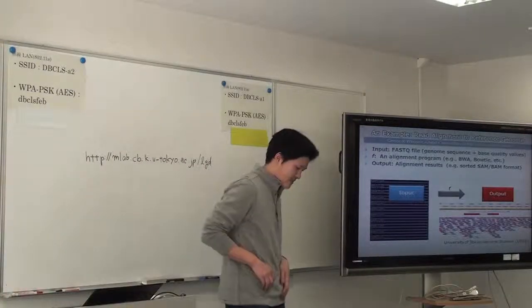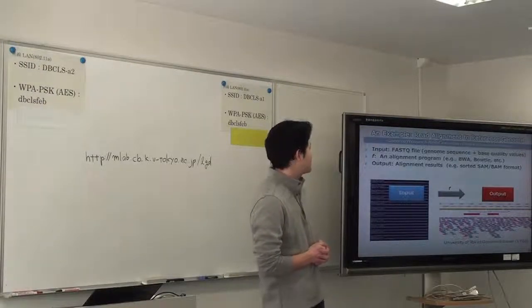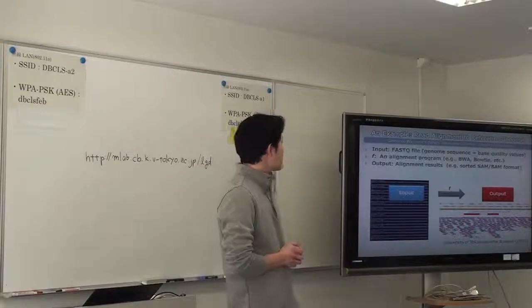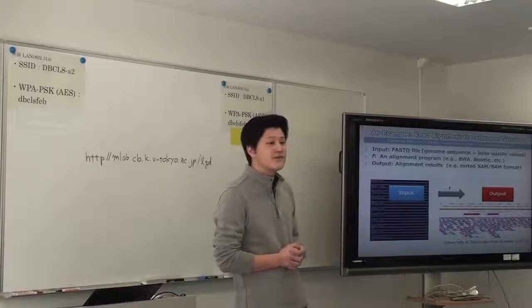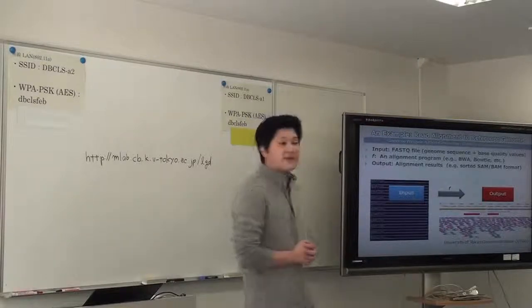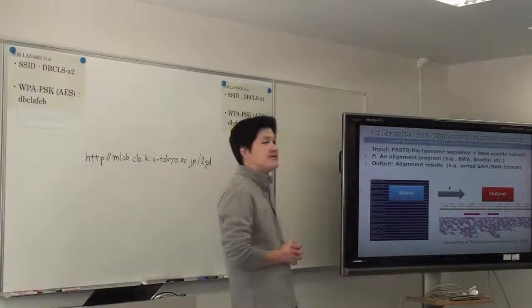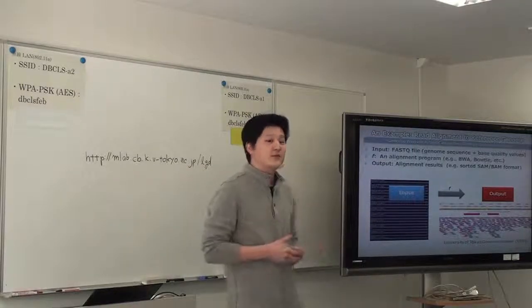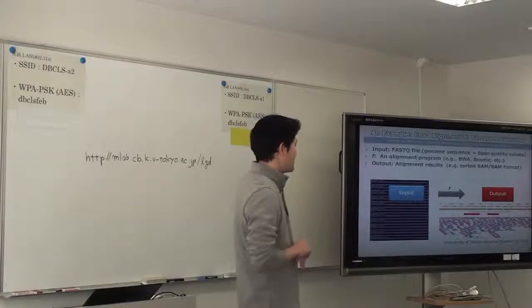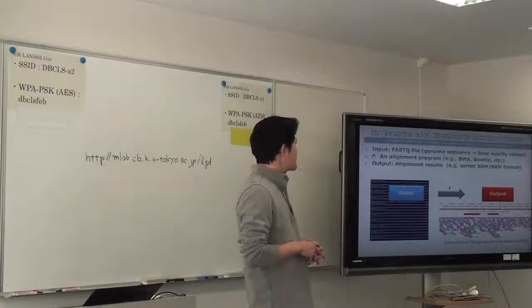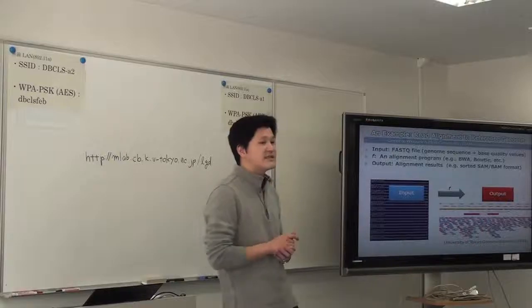And to enhance the example, I will show you an example of read alignment. So in this case, the input is the FASTQ file which contains genome sequences and base quality values. And function F is an alignment program. Any alignment program you can imagine, BWA or any one, okay. And the output is this alignment results.